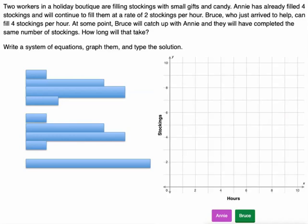Two workers are in a holiday boutique and they're filling stockings with small gifts and candy. Annie has already filled up four stockings and will continue to fill them at a rate of two stockings per hour. Bruce, he just helped. He just arrived. He's late. He can fill four stockings per hour, so he's working faster, but he's starting behind her. At some point, Bruce will catch up with Annie and they will have completed the same number of stockings. How long will that take? Okay, so we're going to write a system and graph the solution.